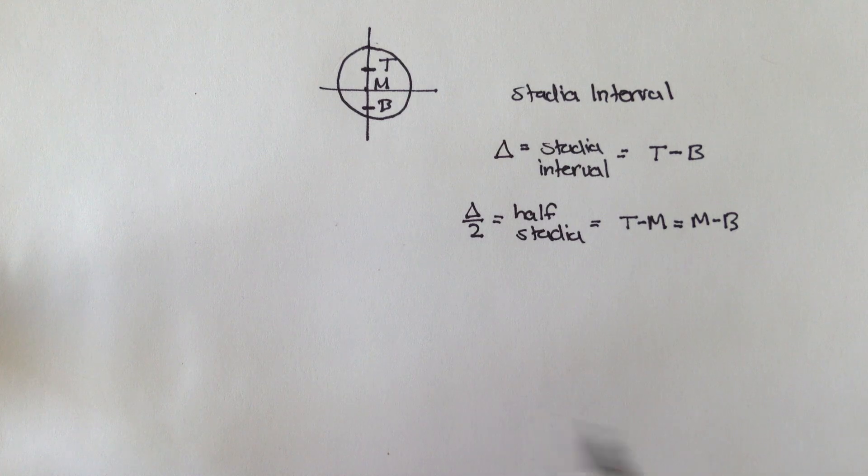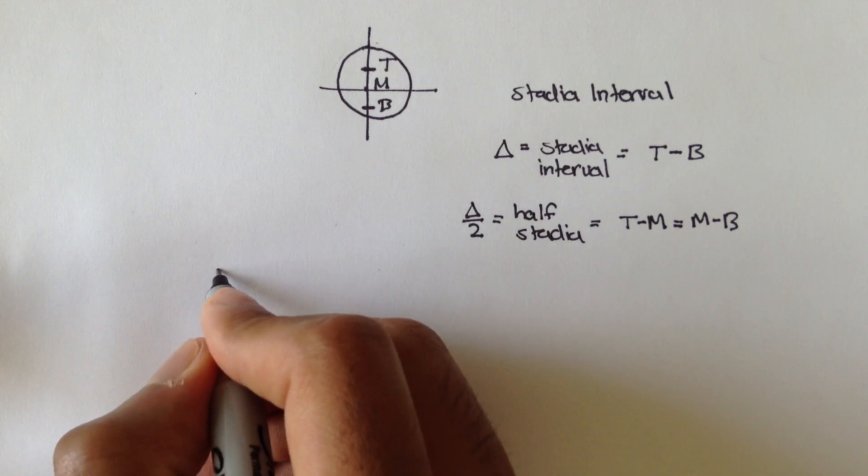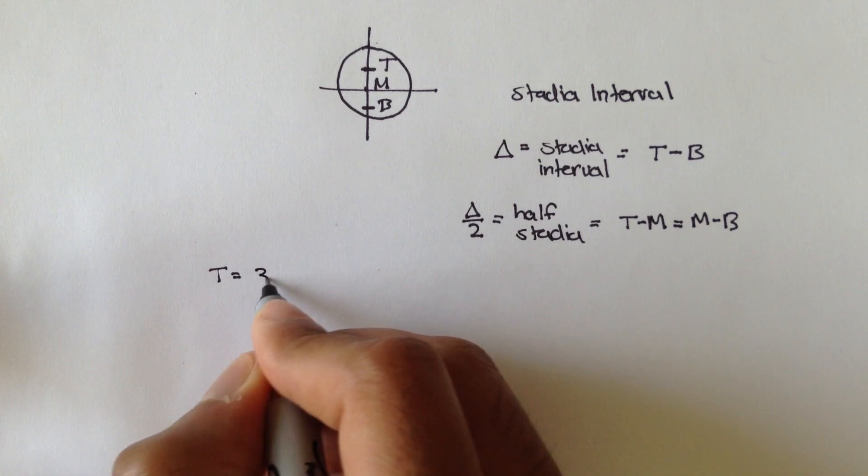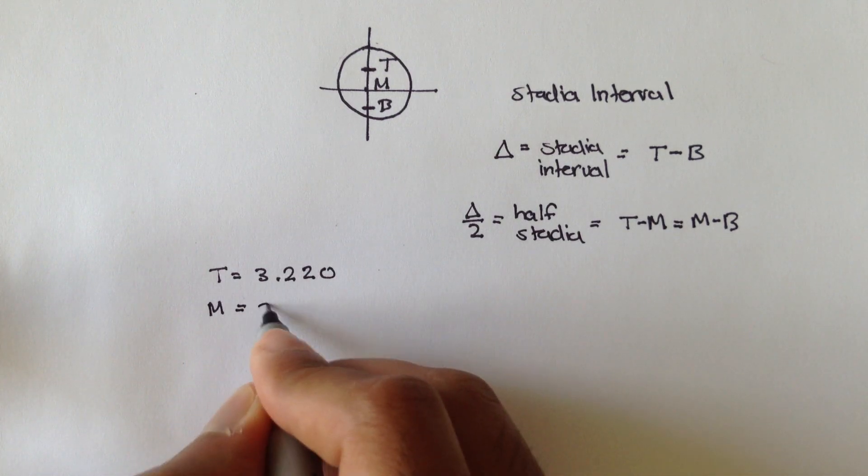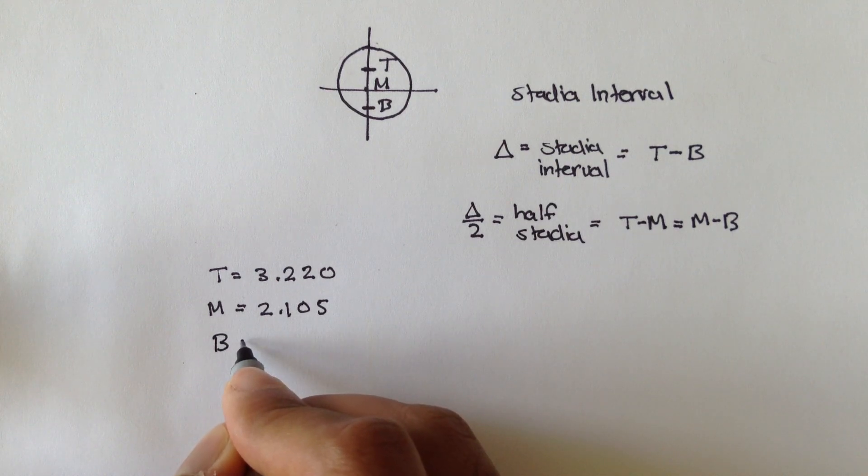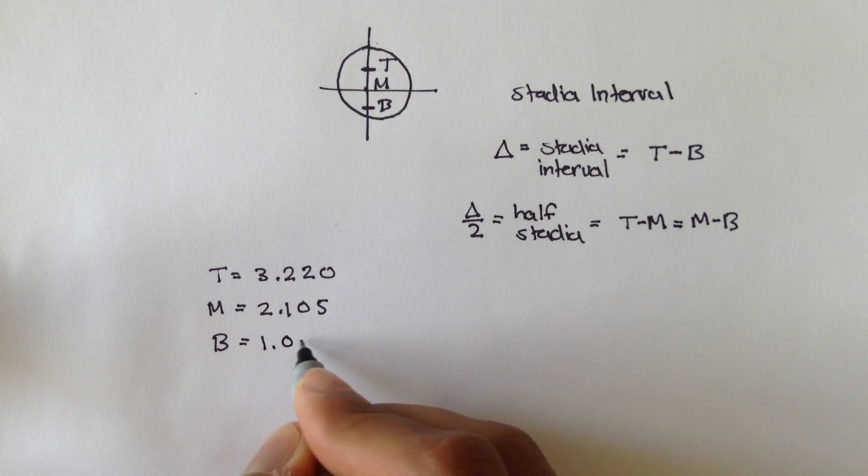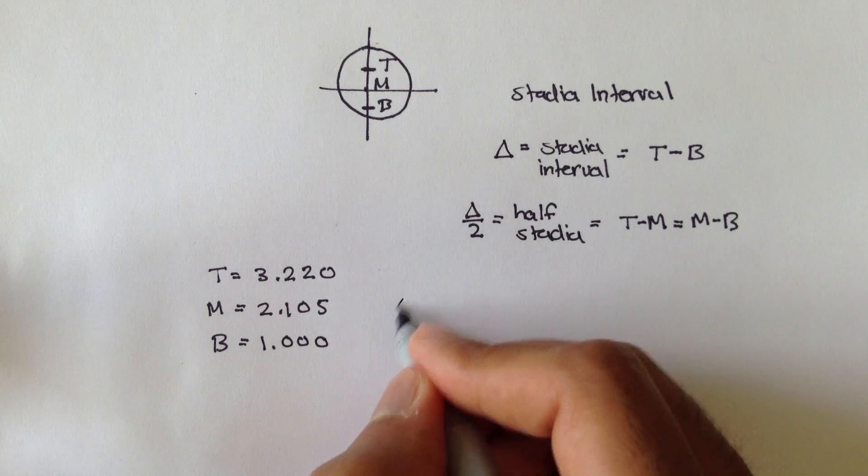So, let's do a quick example. If we were looking through our telescope, and we noticed, or we measured out that the top read 3.220, the middle read 2.105, and the bottom read a flat 1.000,